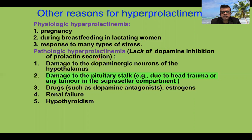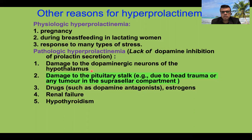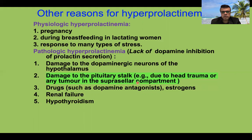Pathological hyperprolactinemia generally results from lack of dopamine inhibition of prolactin secretion. Dopamine released from dopaminergic neurons of the hypothalamus has an inhibitory effect on prolactin. Damage to these neurons — due to trauma or a suprasellar tumor — can reduce dopamine release, leading to hyperprolactinemia. Head trauma or tumors compressing the hypothalamic-pituitary stalk are among the most common causes.